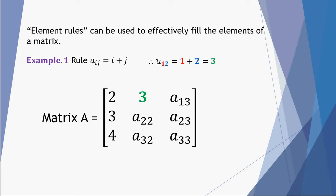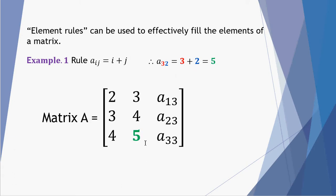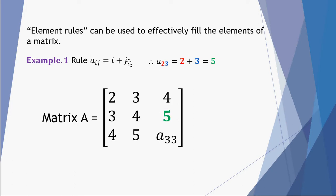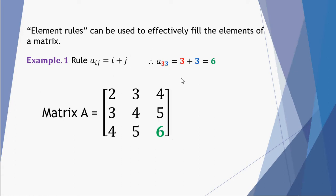Moving on to the second column, same rule again. Row number 1, column number 2: 1 plus 2 is 3. Row 2 column 2 gives a sum of 4. Row 3 column 2 gives a sum of 5. Moving on to our third and final column: row 1 column 3, 1 plus 3 gives 4. Element A 2 3 is row 2 column 3, so 2 plus 3 gives 5. And finally 3 plus 3 gives 6. Using this rule we can fill in the entire matrix.